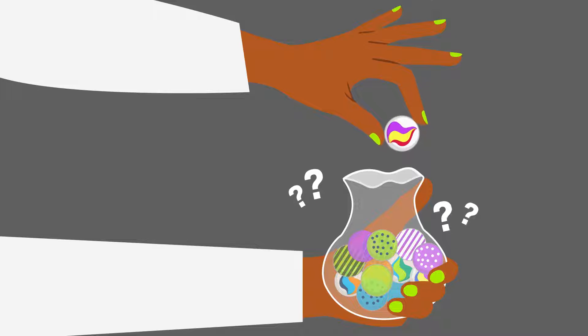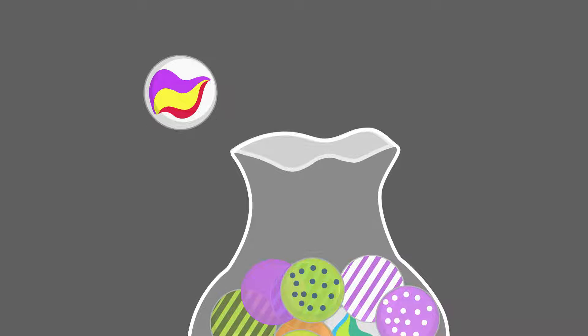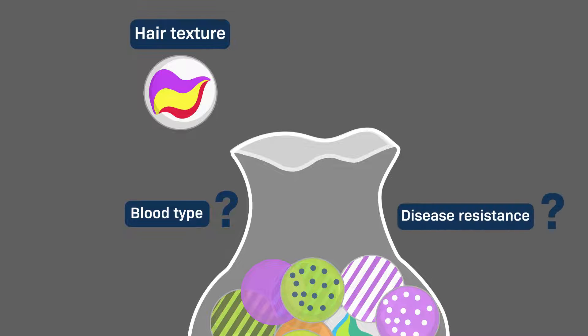Similarly, if you know one of someone's observable traits, say their hair texture, you have no more information about their other traits, like their blood type or resistance to a certain disease, than you did before. That's because all of these traits have evolved separately in response to natural selection.